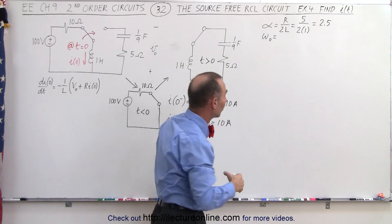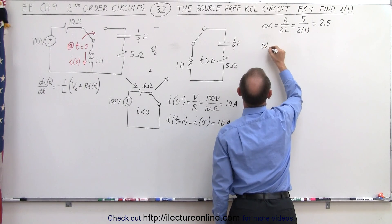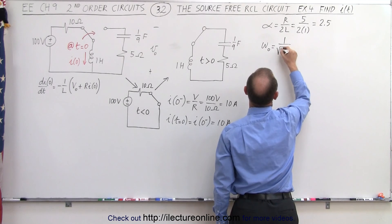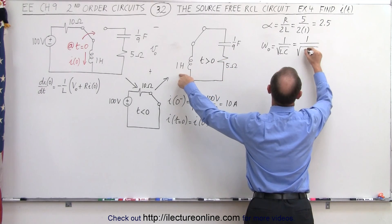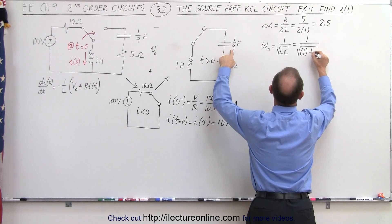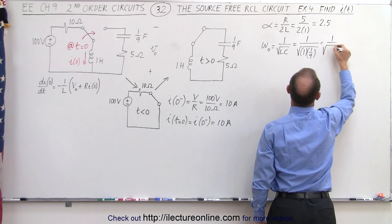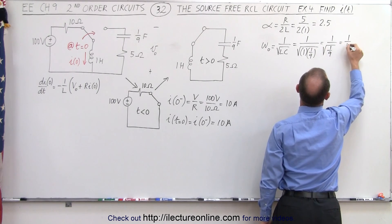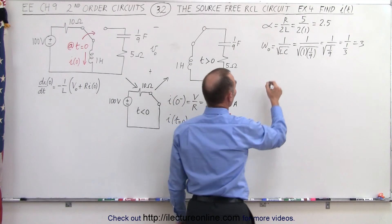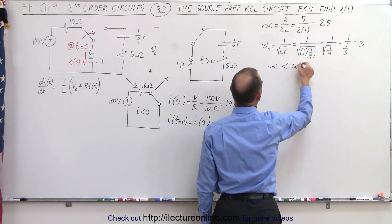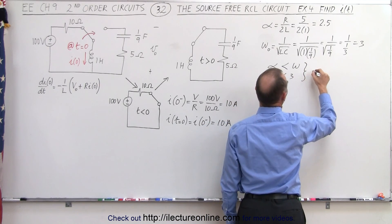Let's find the natural frequency to see if it's underdamped or overdamped. The natural frequency by definition is 1 over the square root of L times C, which equals 1 over the square root of 1 henry times 1/9 farad. This is equal to 1 over the square root of 1/9, which equals 1 over 1/3, which equals 3. The natural frequency is bigger than the damping factor — 2.5 is less than 3 — so the conclusion is that it's underdamped.